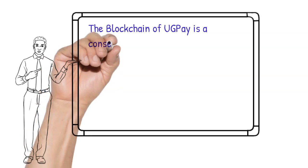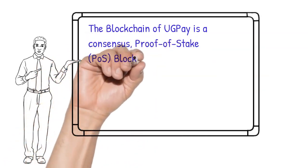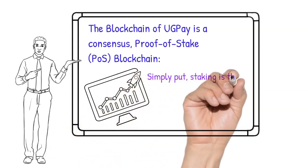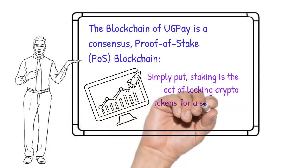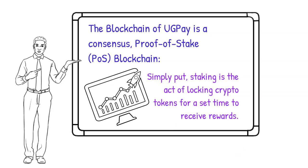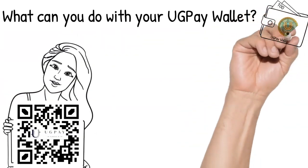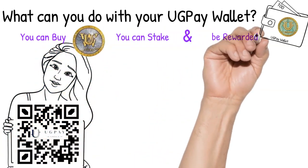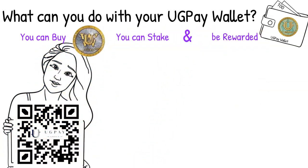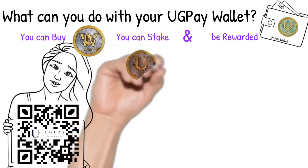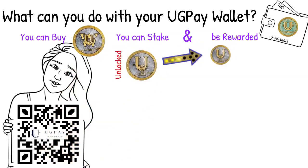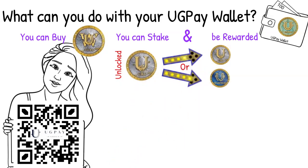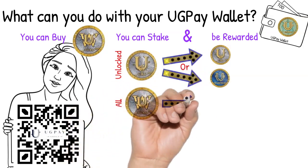UGPay's blockchain is a consensus proof-of-stake (POS) blockchain. What is staking? Simply put, staking is the act of locking crypto tokens for a set time to receive a reward. What else can you do with your UGPay wallet? You can buy WCRU. You can stake your tokens and be rewarded in our proof-of-stake blockchain. You can stake your unlocked CRU for more CRU, or you can stake your unlocked CRU for UNTB. You can also stake your locked WCRU for UNTB.